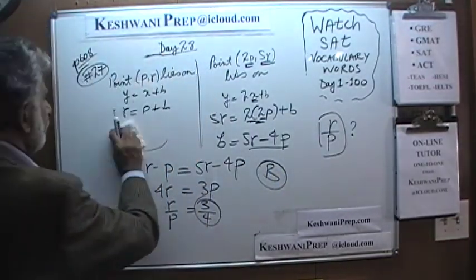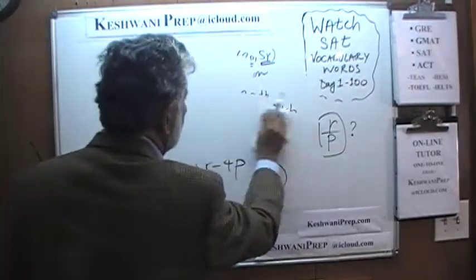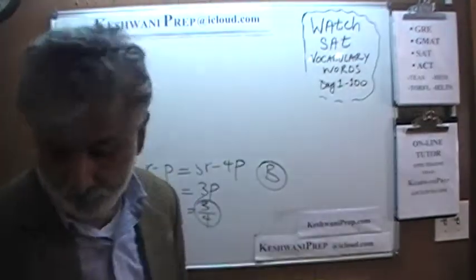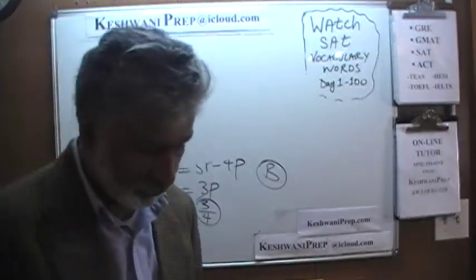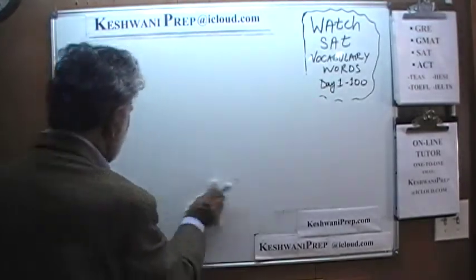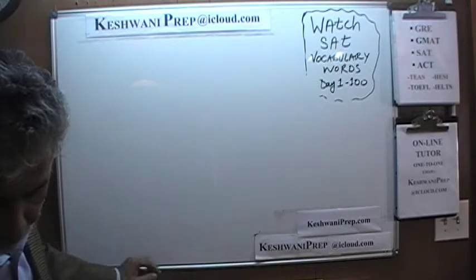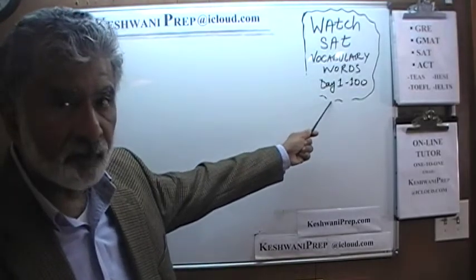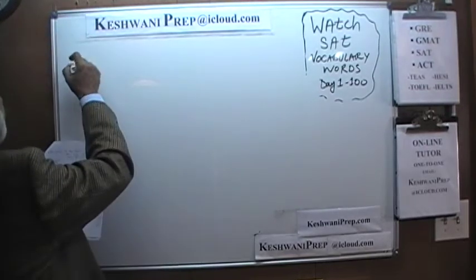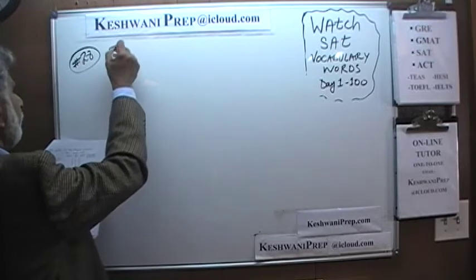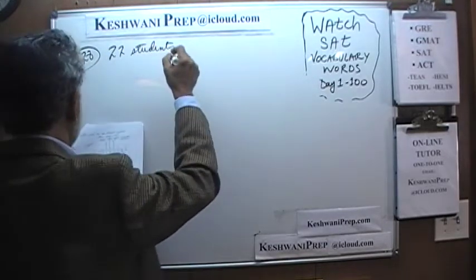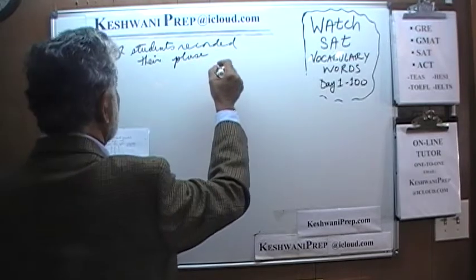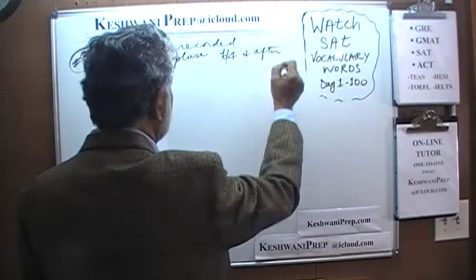Let's do the next one — number 28. I hope you are working on your vocabulary skills for the SAT reading section. Watch those videos — there are 100 of them. Have a discipline, have a regimen, and learn a few new words every day. Number 28: we have 22 students who recorded their pulse before and after doing some exercise.